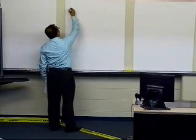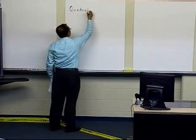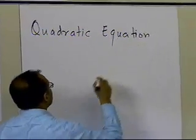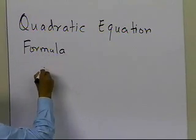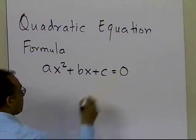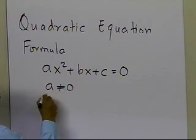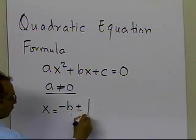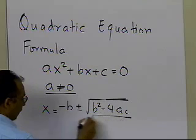In this segment, we're going to talk about the formula for a quadratic equation. So let's see what a typical quadratic equation looks like. Generally, it will look like this: ax squared plus bx plus c equals 0. And the formula for finding the solution, for a not equal to 0, is as follows: x is equal to minus b, plus or minus the square root of b squared minus 4ac, divided by 2a.